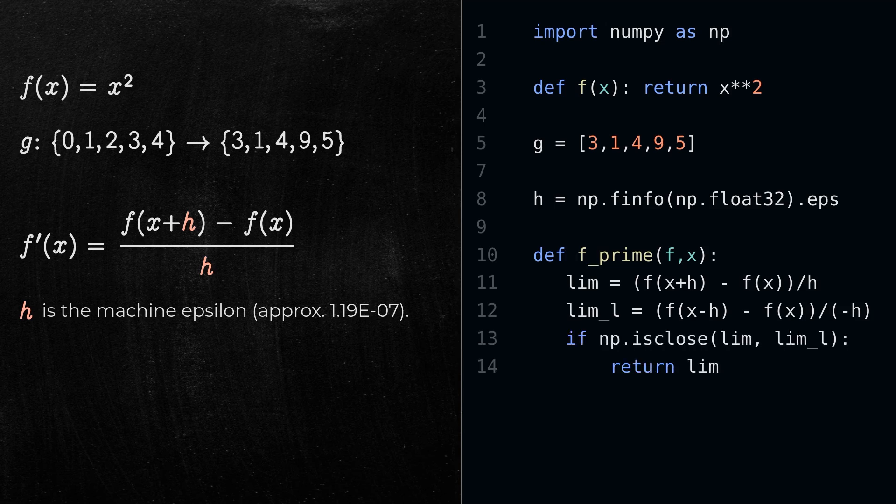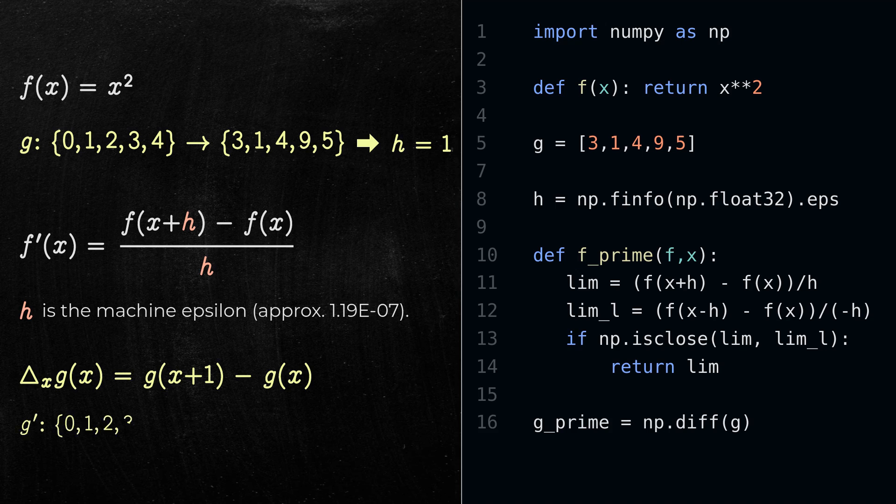The second way to get the derivative of a function is when the function is not given by an equation and its domain is a subset of the natural numbers. An example is the function g. In this case, we simply take h to be equal to 1. So, we have the following. This special case of differentiation is called the difference operator.